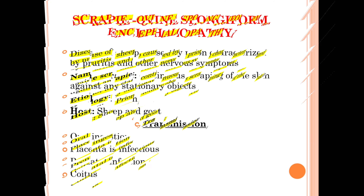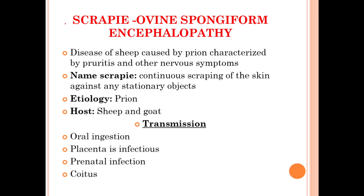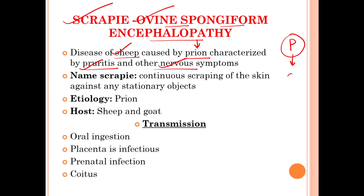Prenatal infection also occurs. If a sheep or goat is infected with the prion causing Scrapie, it will produce two conditions: pruritus and nervous symptoms. Pruritus is basically an uncomfortable itching sensation. Infected sheep or goats will rub their skin against some stationary object to get rid of the itching. The name Scrapie comes from this continuous scraping of the infected animal's skin against a stationary object.